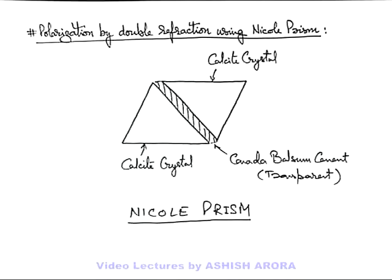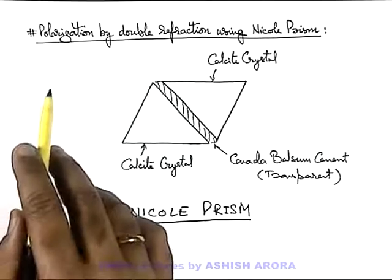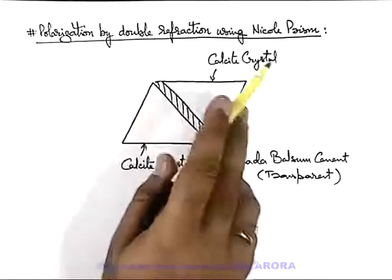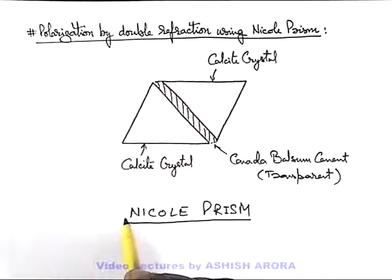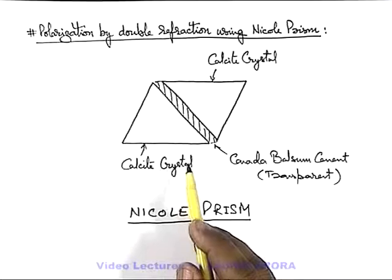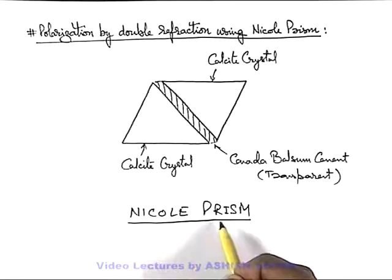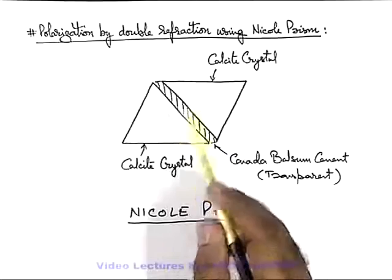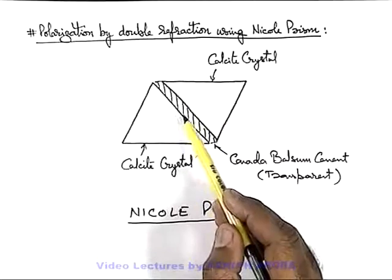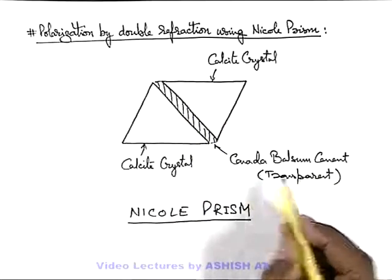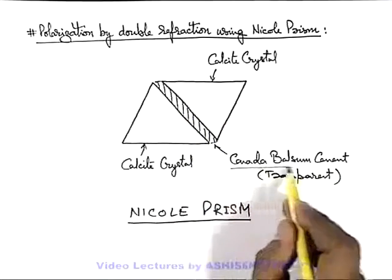Let us now study the concept of polarization by double refraction using a Nicol prism. Here you can see this is the device we call Nicol prism. It is made up by cementing two calcite crystals by a transparent cement called Canada balsam.